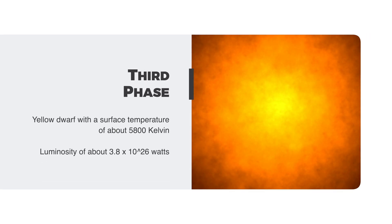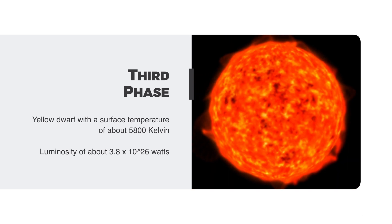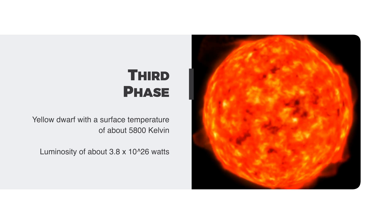The third phase is the main sequence stage, which is where the Sun is currently located. It moves along the main sequence in the Hertzsprung-Russell diagram, which shows the relationship between the luminosity and temperature of stars.